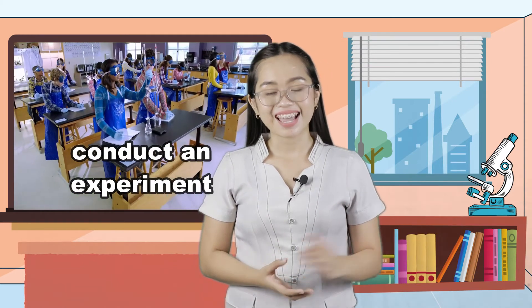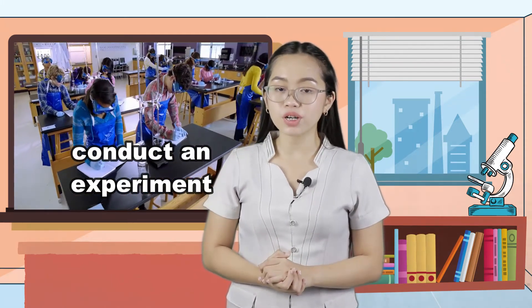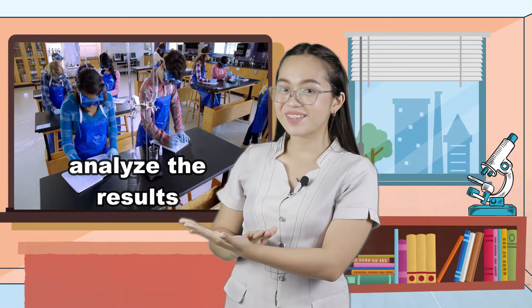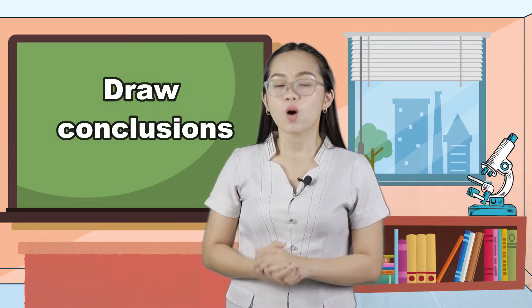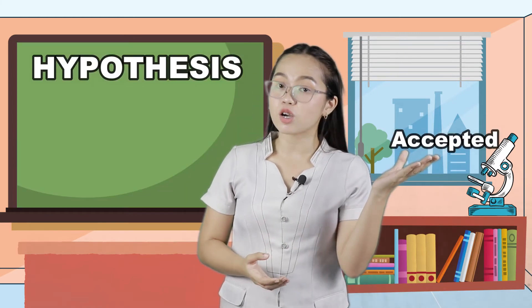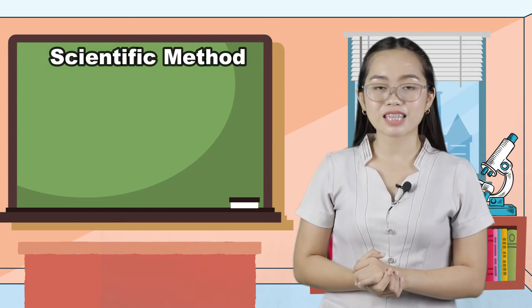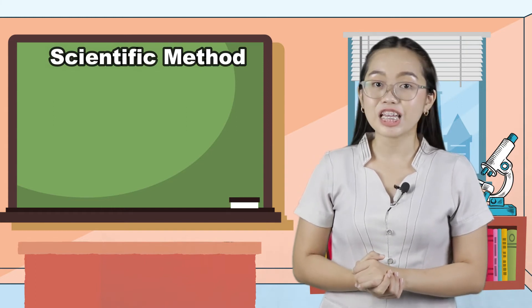The next step after forming a hypothesis is to conduct an experiment. After your experiment, make sure to record your observations and data so that you'll be able to analyze the results. Lastly, you need to draw conclusions, where the main aim is to summarize the findings of your experiment and determine whether your hypothesis is accepted or rejected. Now, after discussing the scientific method, let us assess if you can recall the steps by enumerating them.